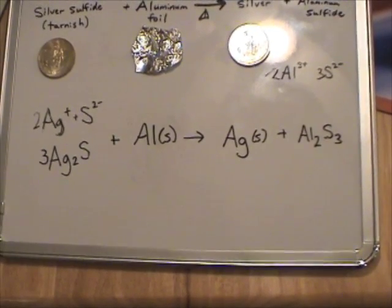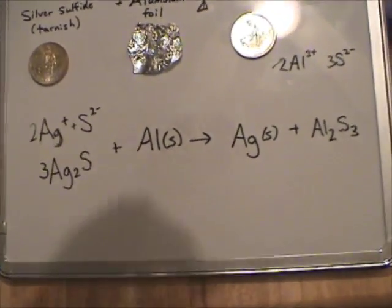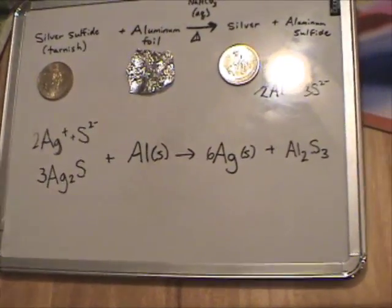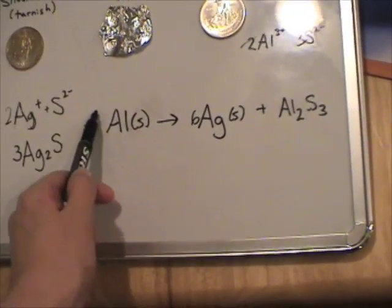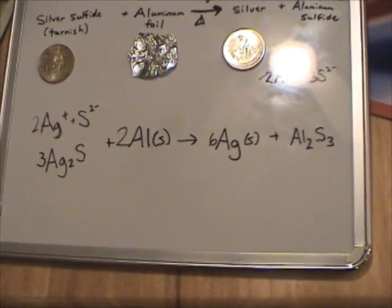Our silver, we need to put six silvers to get them balanced. Oh man, but we forgot about the aluminum. So now there's two over here, so we put a two over here.